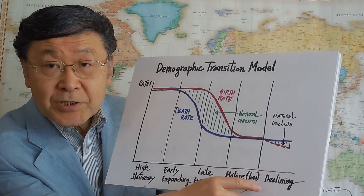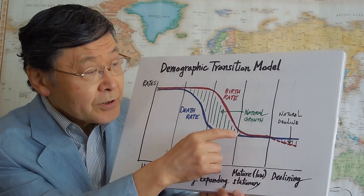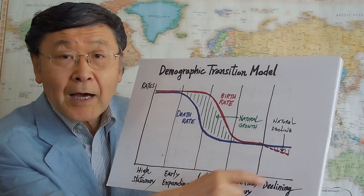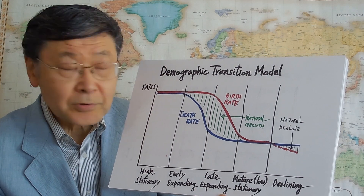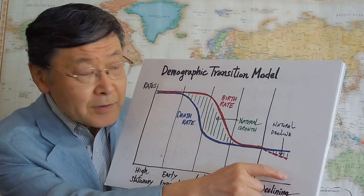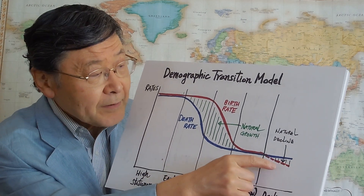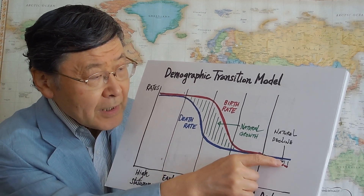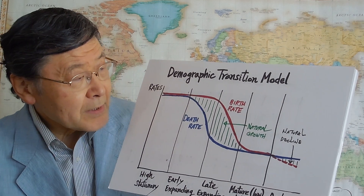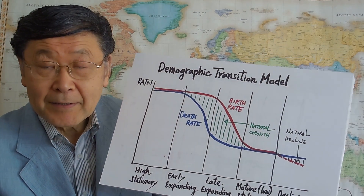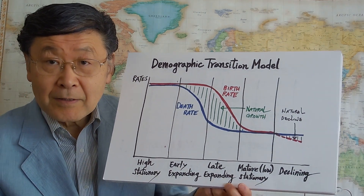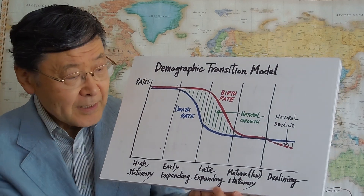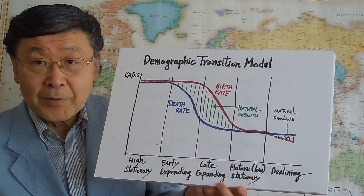In the fifth stage, some countries will experience a further decline in birth rate, so that the difference between birth rate and death rate becomes negative, meaning natural population decline. Some countries, like Japan, are experiencing that kind of phase. This is called the declining period.